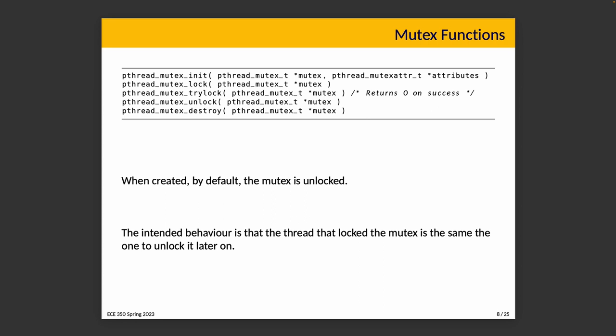As for the lock functions: the blocking version, pthread_mutex_lock, is the one we need most of the time — it will block the current calling thread if the lock is not acquired. Then there's try_lock, which is the non-blocking version. To destroy a mutex, we just destroy it; if attributes were created, we should destroy them as well.